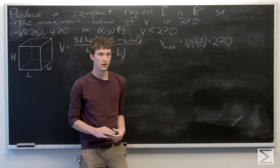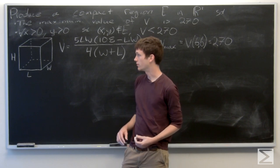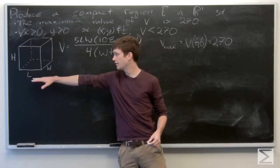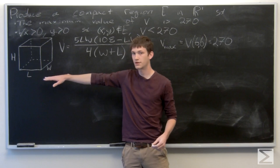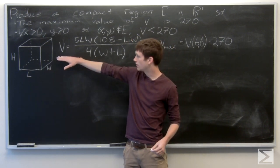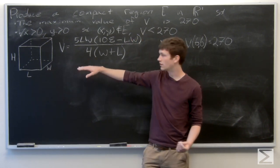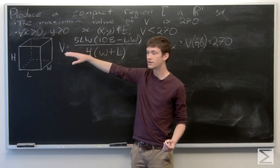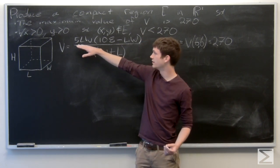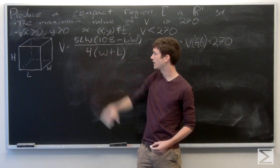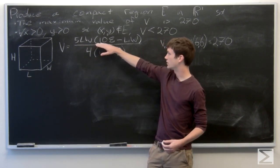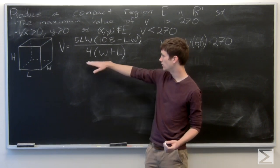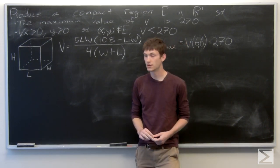That maximum occurred when our length and width were both equal to 6. We're given our box here with length, width, and height. Our volume, based off of cost, is determined in terms of L and W as 5LW times the quantity (108 minus LW), all over 4 times (L plus W).